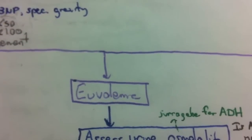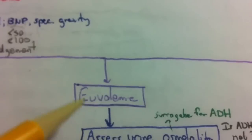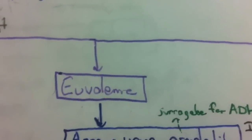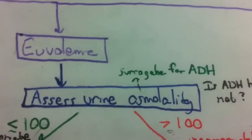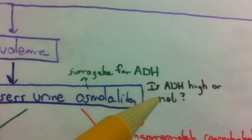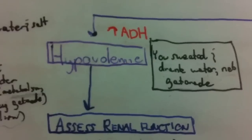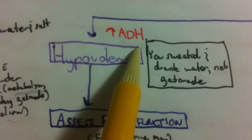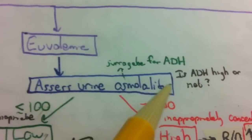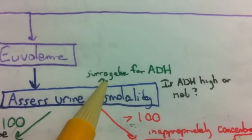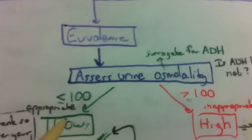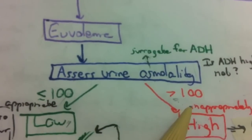Moving on to euvolemic hyponatremia: the clinician says the patient looks normal — no dry cracked lips, no orthostatic changes, no JVD — so the patient looks euvolemic. Now we're going to assess urine osmolality because the specific question is: is ADH high or not? In hypovolemic hyponatremia we knew ADH was high because hypovolemia overrides the hypoosmolality, but right here we aren't entirely sure — this is the only situation where we might not have a high ADH.